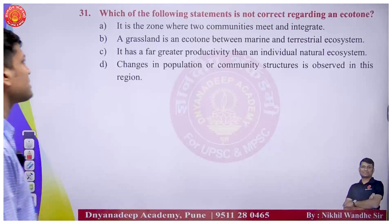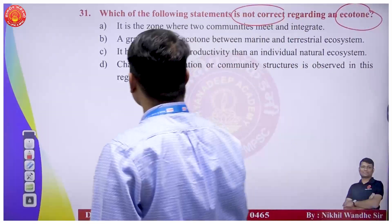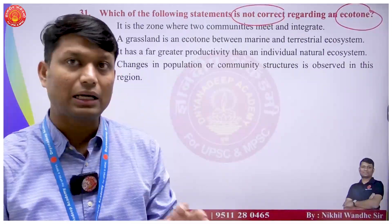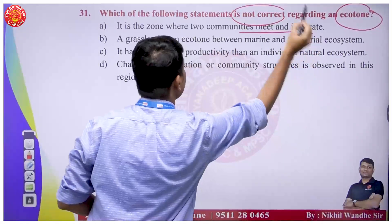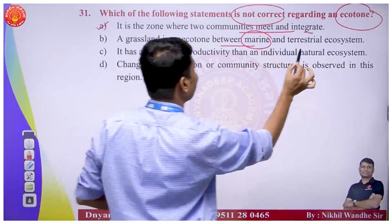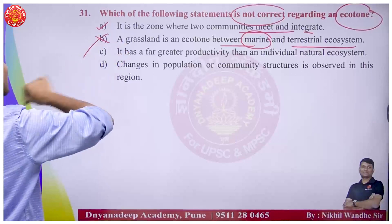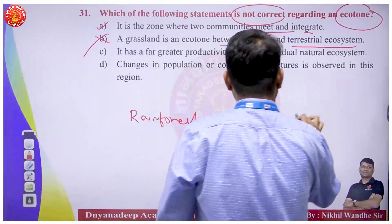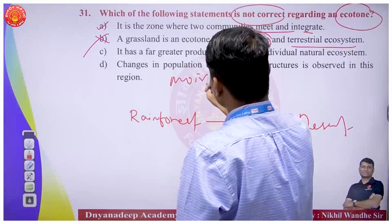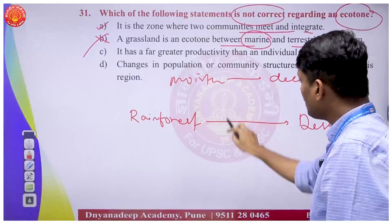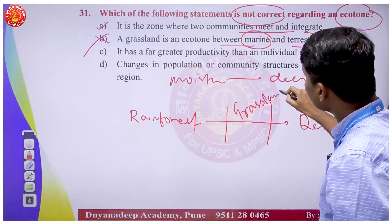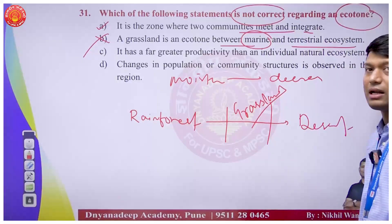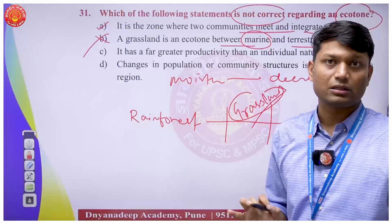Question 31 on ecotone: an ecotone is a transition ecosystem - the zone where two communities meet and integrate. Grassland is NOT an ecotone between marine and terrestrial ecosystems. When moving from rainforest towards desert, moisture decreases - grasslands exist where there is only enough moisture for grasses to survive. That is how ecotone should be understood.